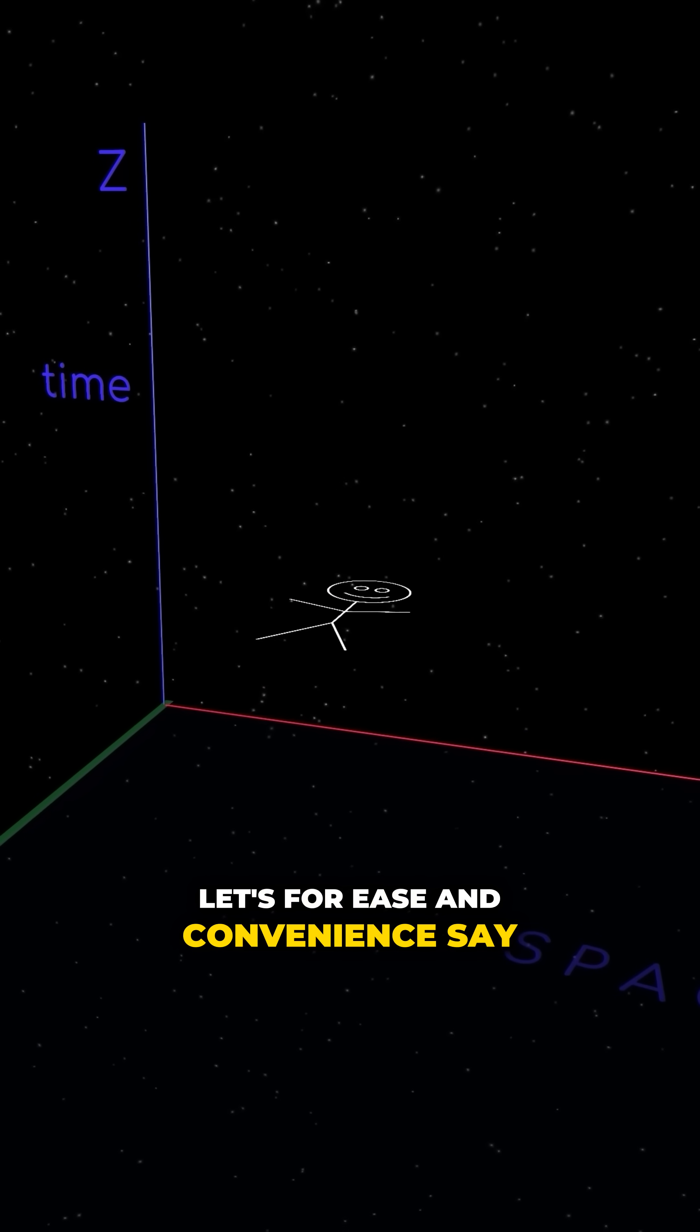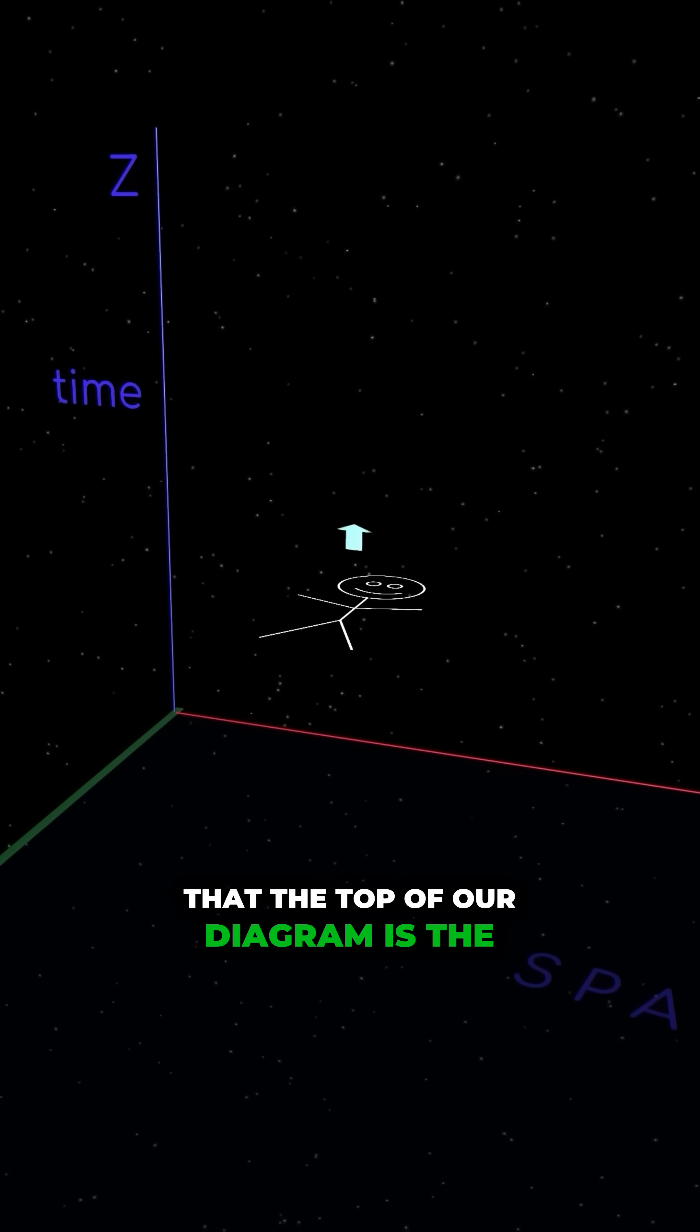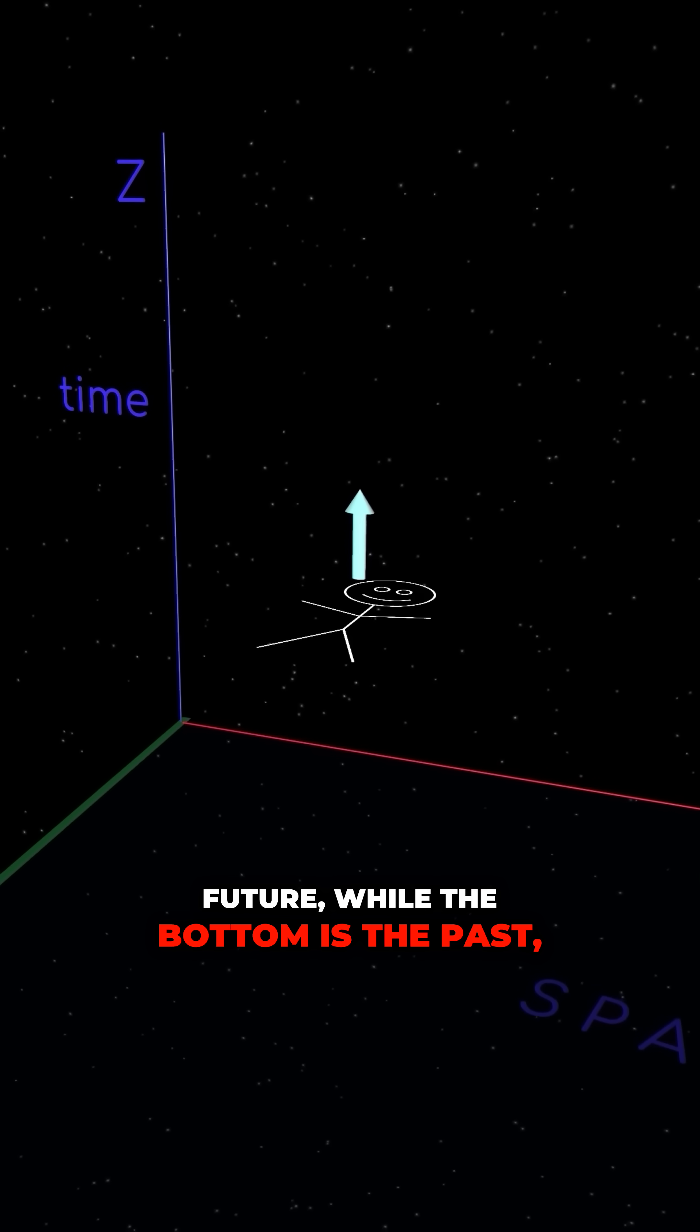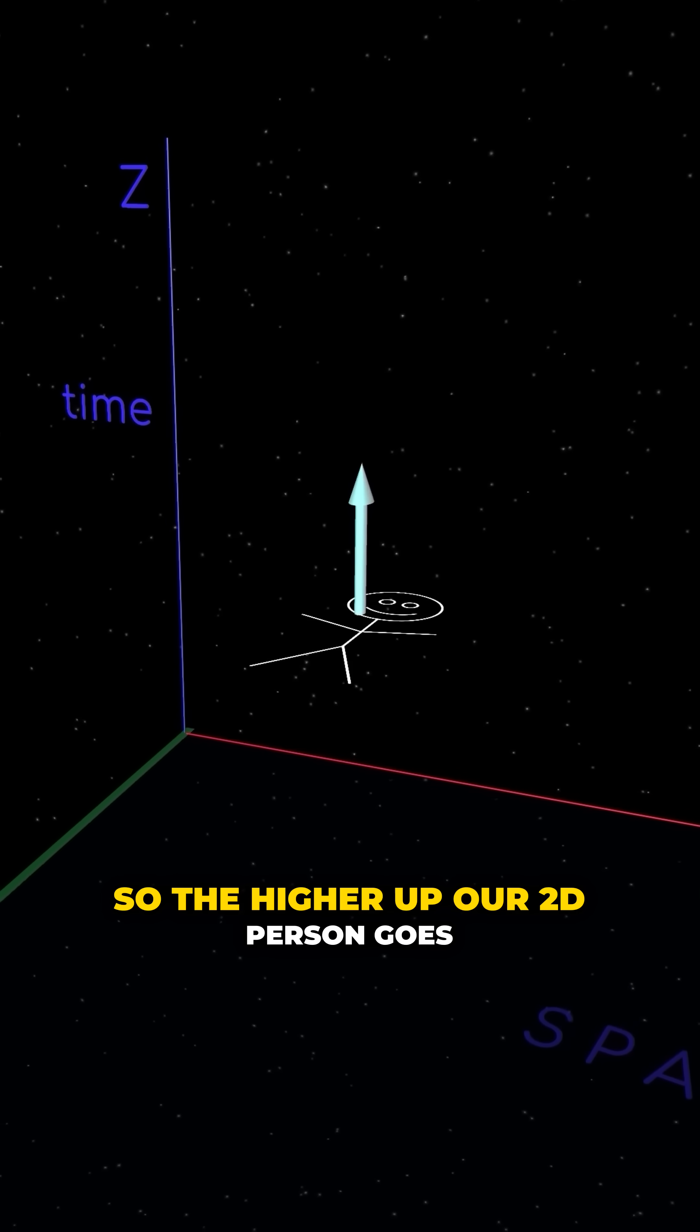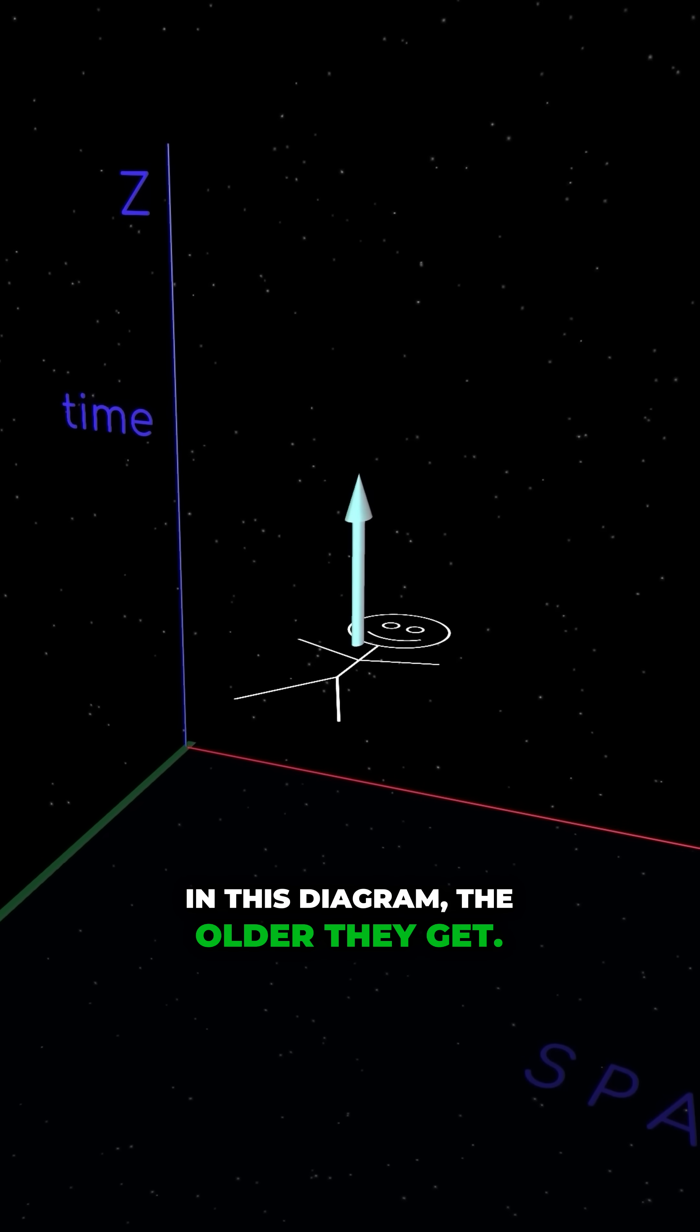Let's for ease and convenience say that the top of our diagram is the future, while the bottom is the past. So the higher up our 2D person goes in this diagram, the older they get.